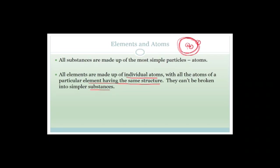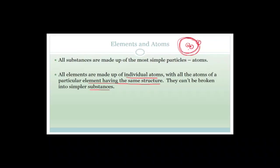Most elements — if you had to break them up — you would have to do what is called nuclear fission, which is the same as a nuclear bomb. That requires huge amounts of energy, and huge amounts of energy are given off when that happens. So normally, when we're talking about normal reactions with everyday elements, the atoms do not break down into simpler substances. All elements are made up of these basic building blocks, which are the atoms.